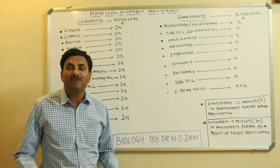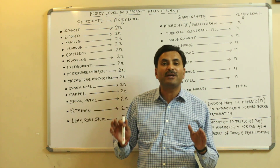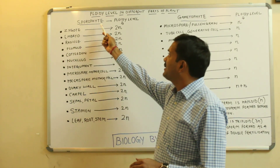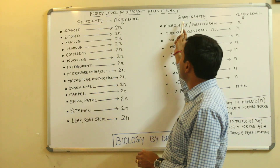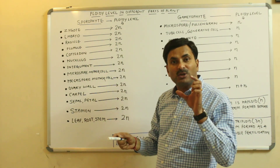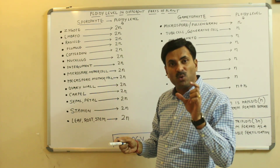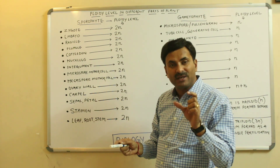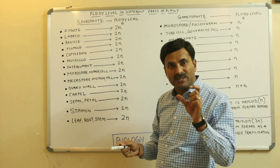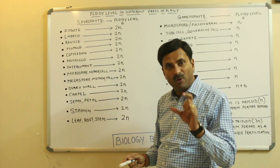Hello to all. Today we will discuss the ploidy levels of different parts of the plant. Here I have written the sporophyte and the gametophyte. As we know, there are two types of parts: one is known as the sporophyte and another is known as the gametophyte. Sporophytes are always diploid and the gametophyte is always haploid.